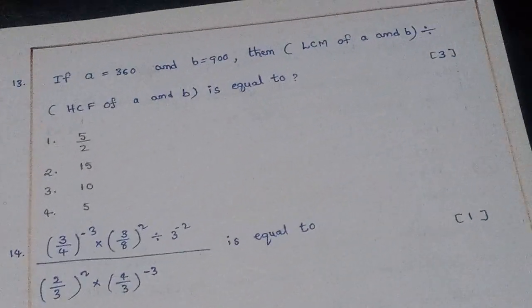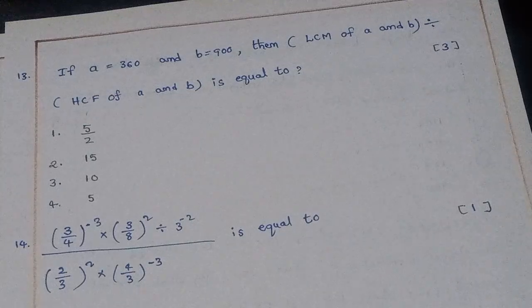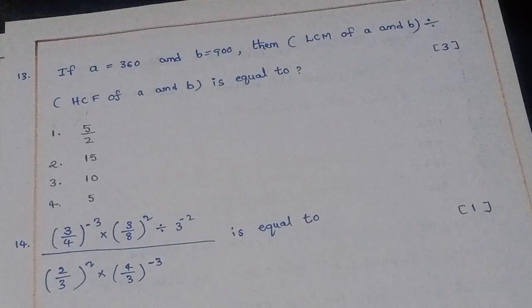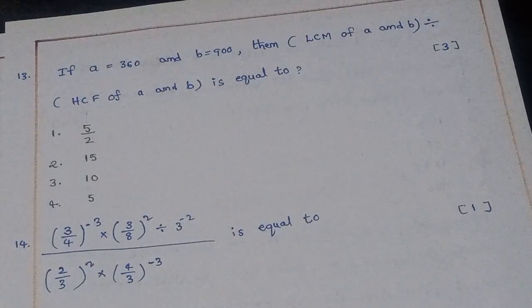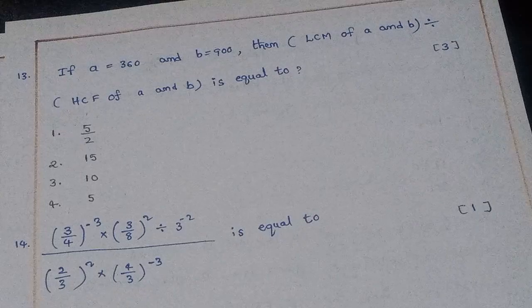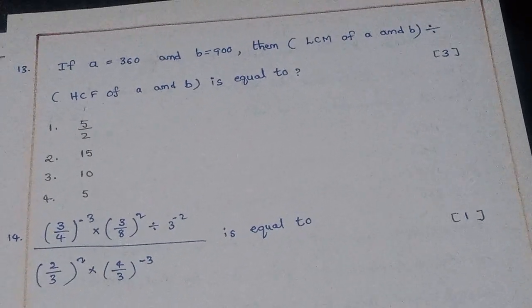Thirteenth question: If a = 360 and b = 900, then LCM(a, b) divided by HCF(a, b) is equal to what? The right answer is option 3: 10.